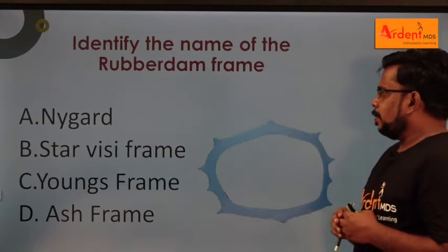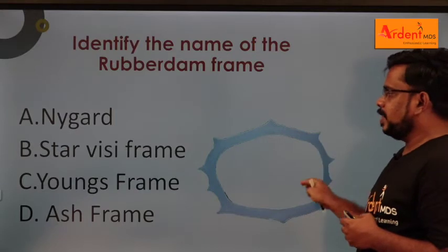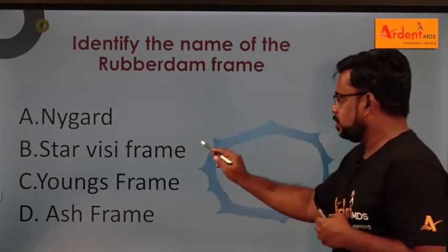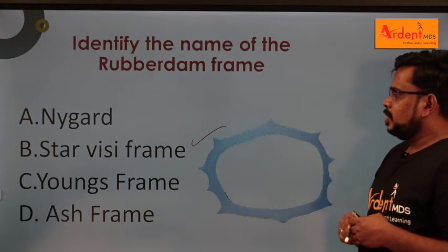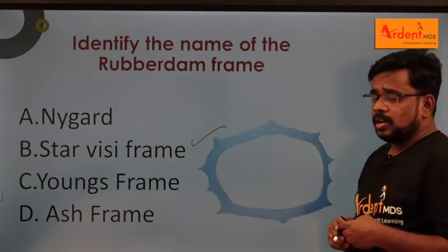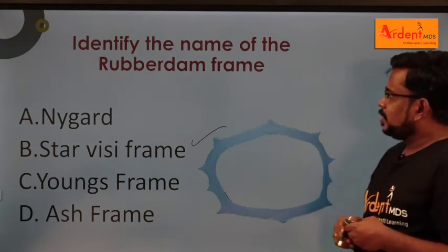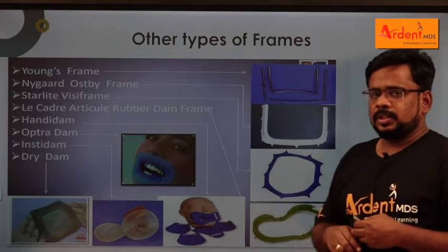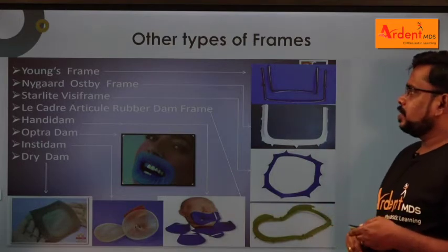Next question: identify the name of the rubber dam frame. The answer is Starvisi frame. Many students will confuse whether it is an Ivory frame or an Ostby frame. So I'll put all the frames together. These are the different types of frames. First of all, we have to know the use of the frame.